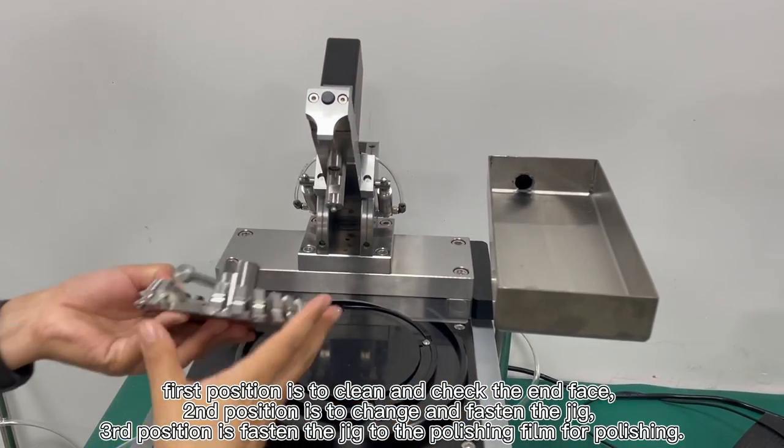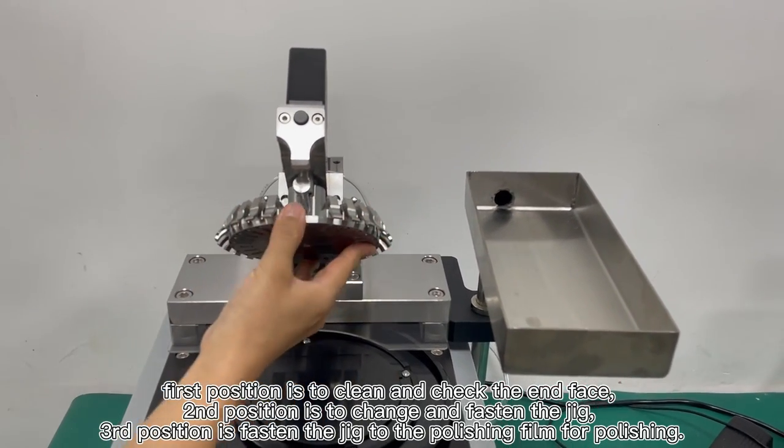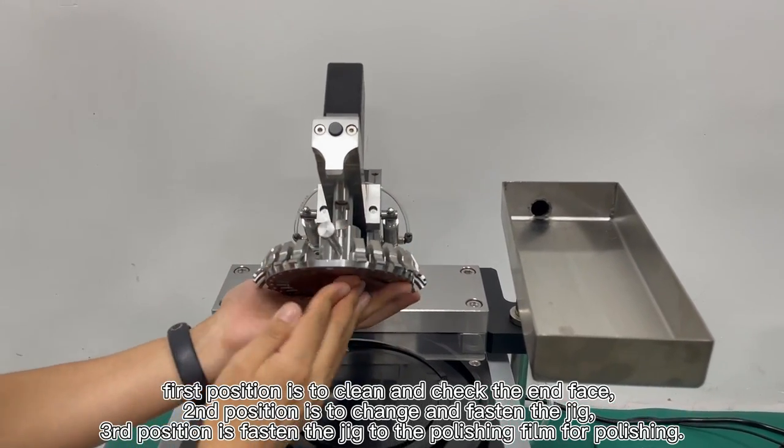It can change to three different positions. This position is to mount the jig. Just push it onto here. It is very fast. Just push it to mount it.